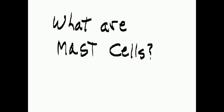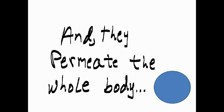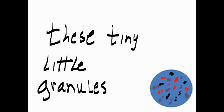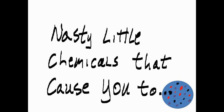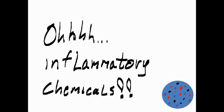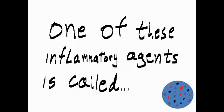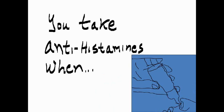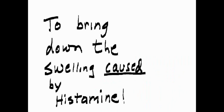What are mast cells? They are immune system cells that permeate the whole body and are filled with tiny little granules. These granules are nasty chemicals — inflammatory agents — that cause you to swell up like a balloon. One of these inflammatory agents is called histamine. You take antihistamines when your nose gets stuffy to bring down the swelling caused by histamine.